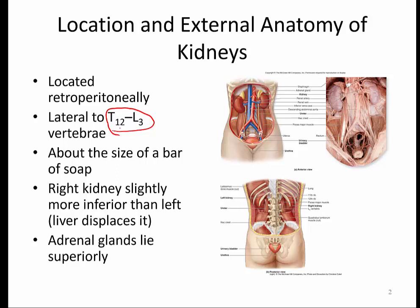On top of the kidneys are the adrenal glands. You should remember from your endocrine chapter that the adrenal glands have both neural components as well as hormones that are released hormonally.